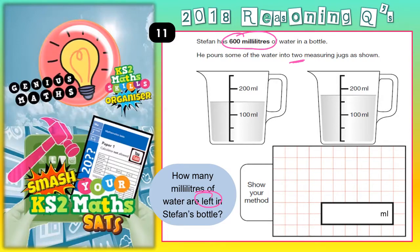We need to be able to read the scale up the side of both jugs to see how much he's poured into each jug. Then we can subtract those amounts from 600 and see what is left. This measurement here is 100 and this one is 200, so between 100 and 200 — which is where the water level is in the first jug — would be 150.